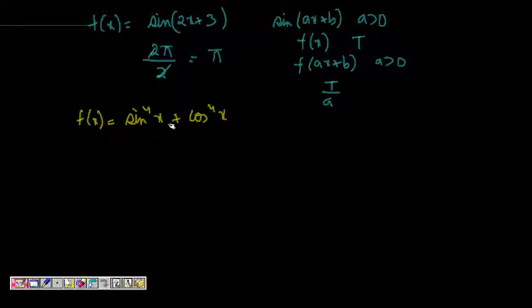But let us, I know that sine x, sine 2x and all I can know because of this formula. Sine 2x we know because again sine x we know, so sine 2x will be, a is here 2, so 2 pi by 2.